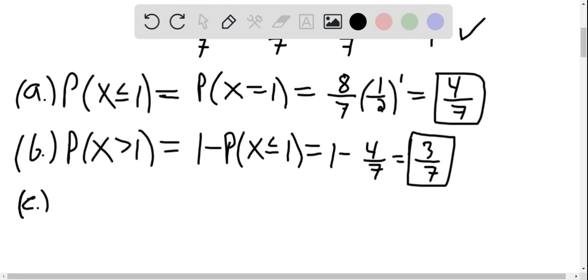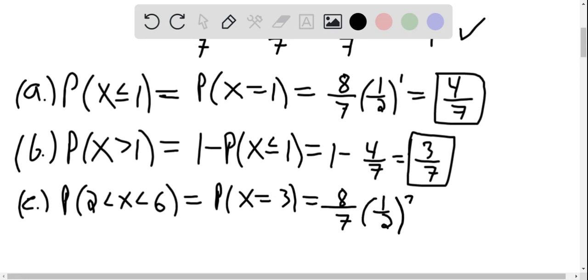On c, we want the probability of x being between 2 and 6. And so we look for all of the x values that are between 2 and 6. And the only one is 3. And so this is just equal to the probability that x is 3. And so we plug in 3 for x. And that gives us 1 7ths.